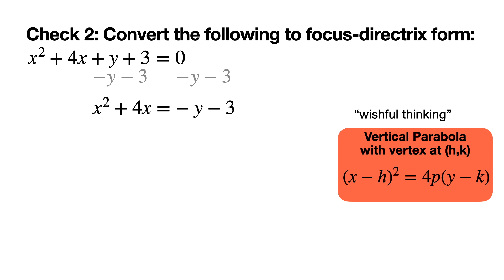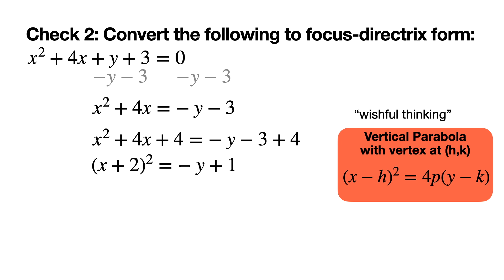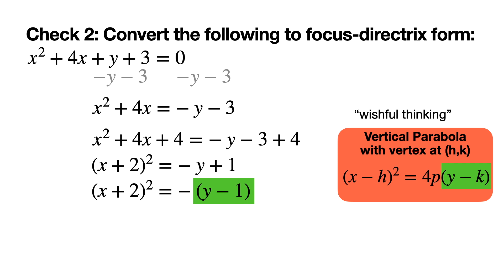To complete the square, take half of the x coefficient — half of 4 is 2 — then square it to get 4, and add that to both sides. The left-hand side factors as x plus 2 squared. The left side now matches the focus-directrix form, but the right side doesn't have parentheses yet. To get the required parenthetical expression, factor out a negative one, giving negative times the quantity y minus 1. Now we're in focus-directrix form.